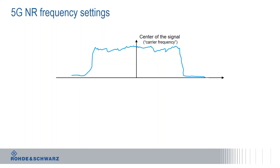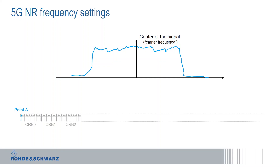Now with 5G NR that has changed. Basically everything is now based on what is called common resource blocks. Common resource blocks start typically from a reference point called Point A, and they are defined for a fixed numerology, meaning sub-carrier spacing. For the two frequency ranges, common resource blocks are based on 15 kHz for FR1 and on 60 kHz for FR2. The frequency Point A can be understood as a kind of orientation — a pointer in the frequency domain for any frequency or allocation being assigned in 5G NR.